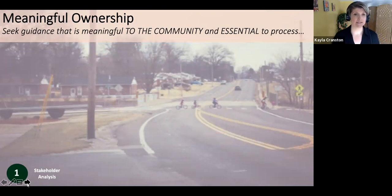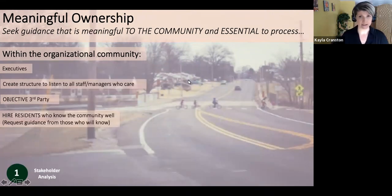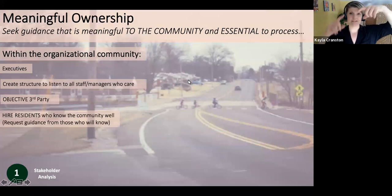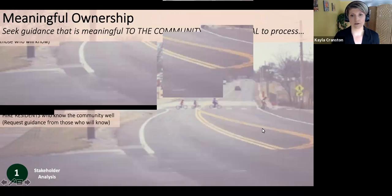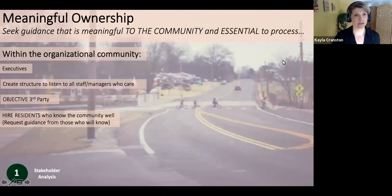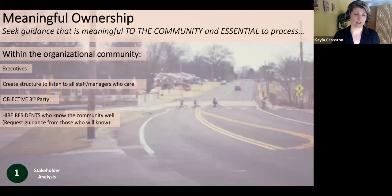So: meaningful ownership — seeking guidance that is meaningful to the community and is essential to the process. Within the organization, this comes back to the executives. What I found to be most useful is that if there's anybody on your executive team who is actually from that community, you want to make sure you are engaging them early on. You want to engage executives who are already knowledgeable about the community you're going into. That was kind of where we started.